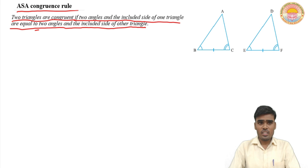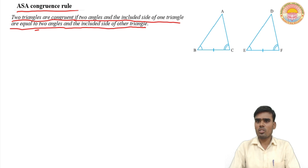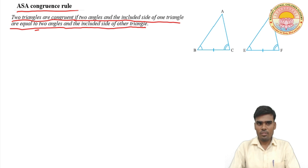Similarly, in the ASA congruence rule, if two corresponding angles and their included sides are equal, then we can say that triangle ABC is congruent to triangle DEF.